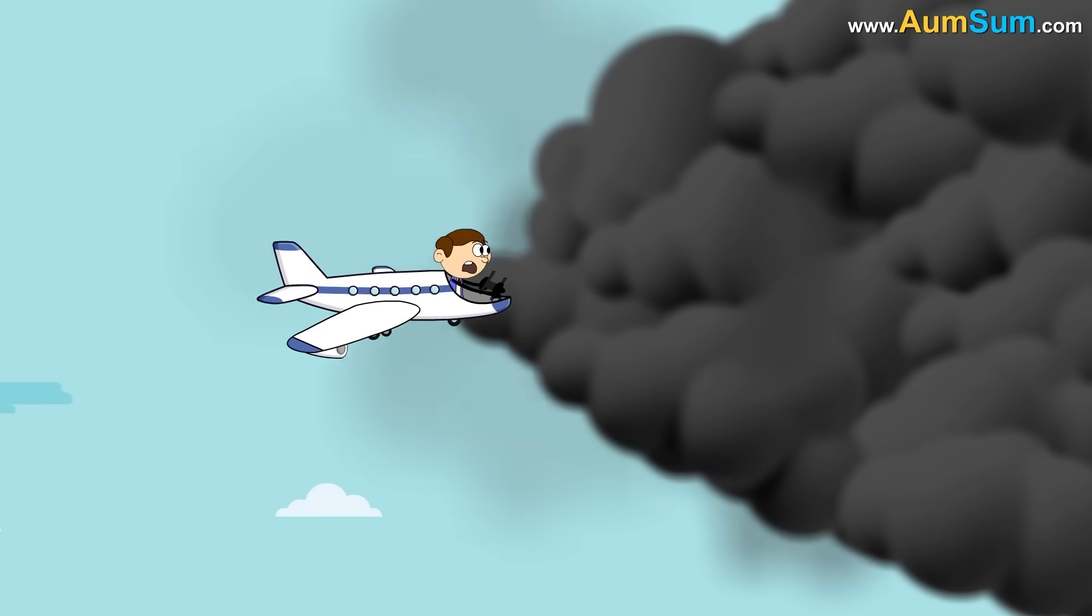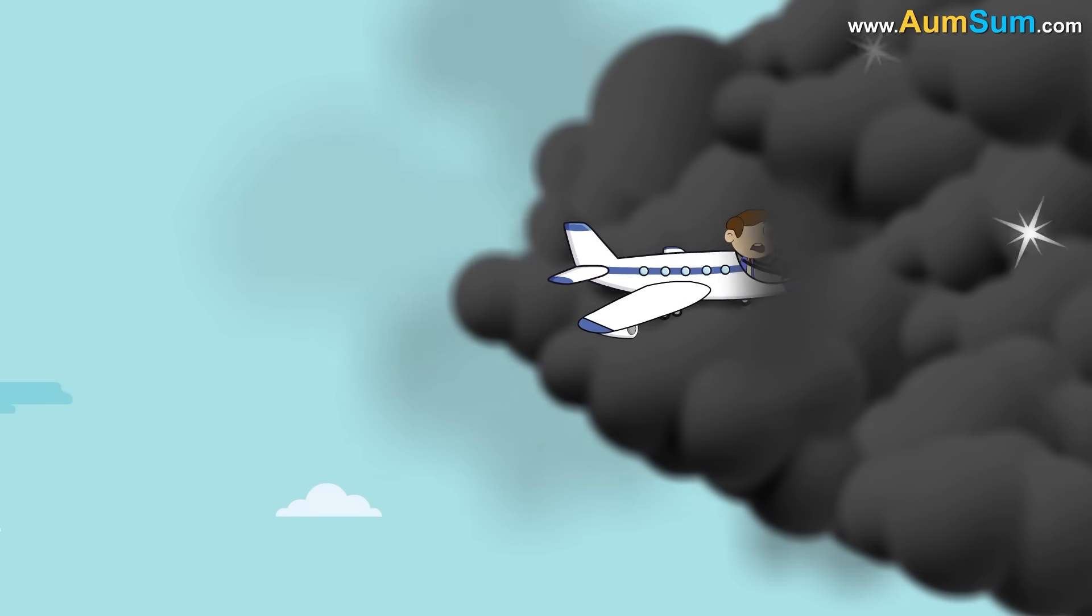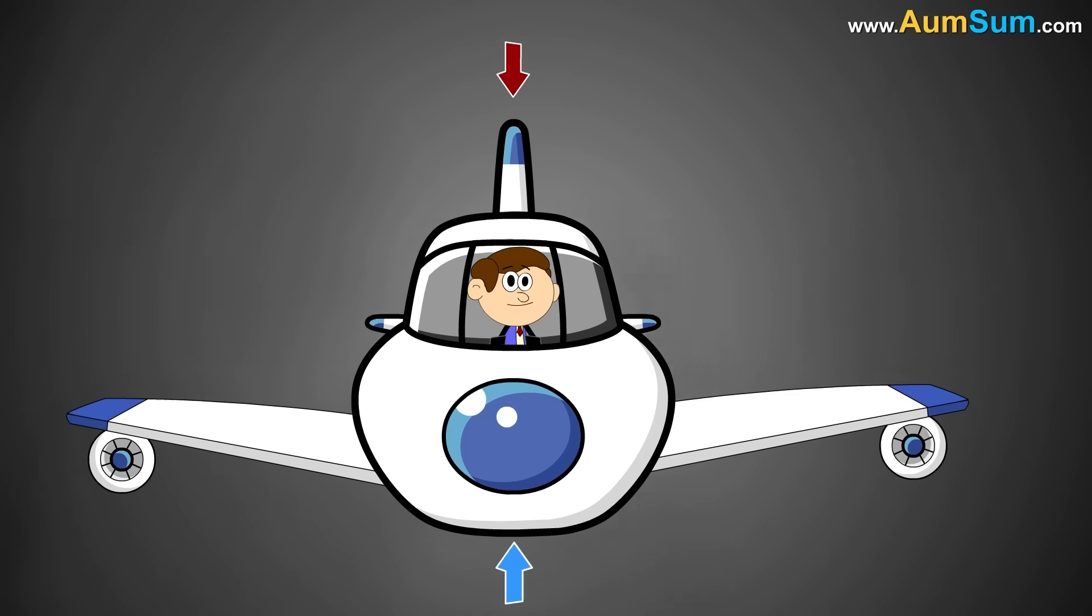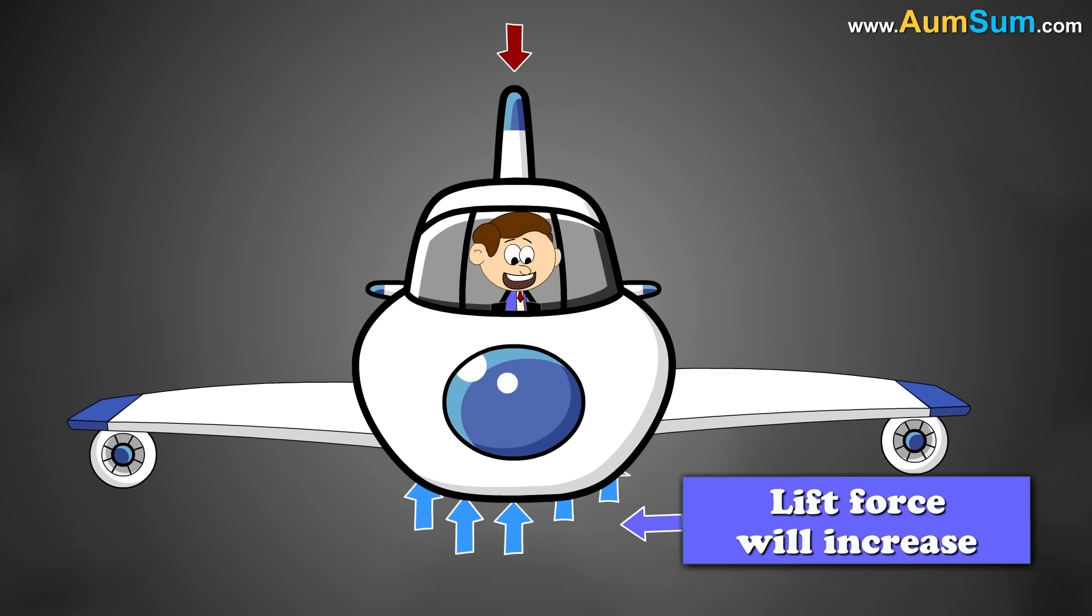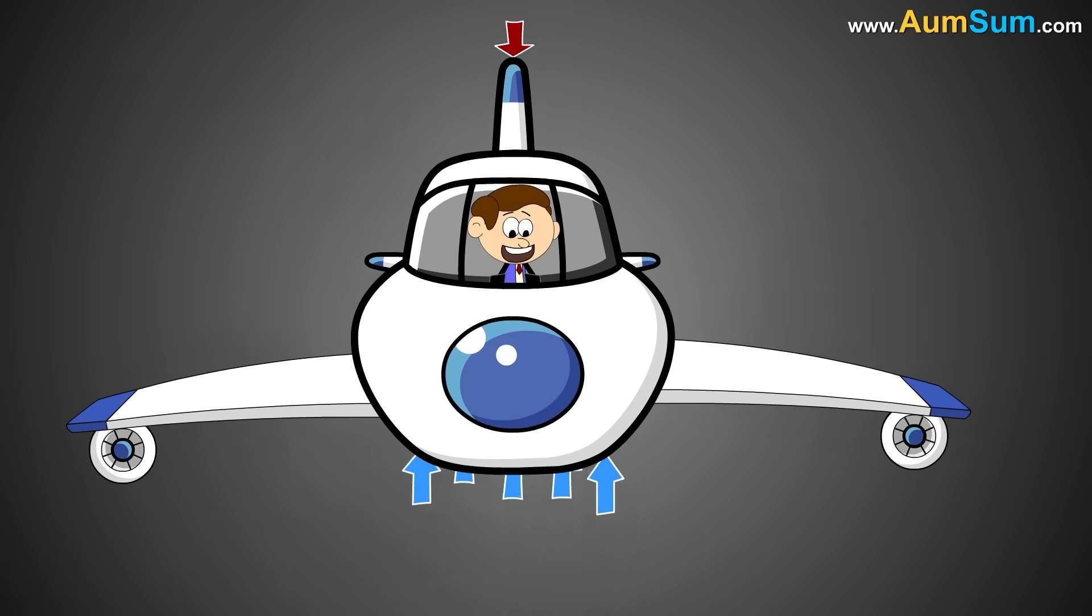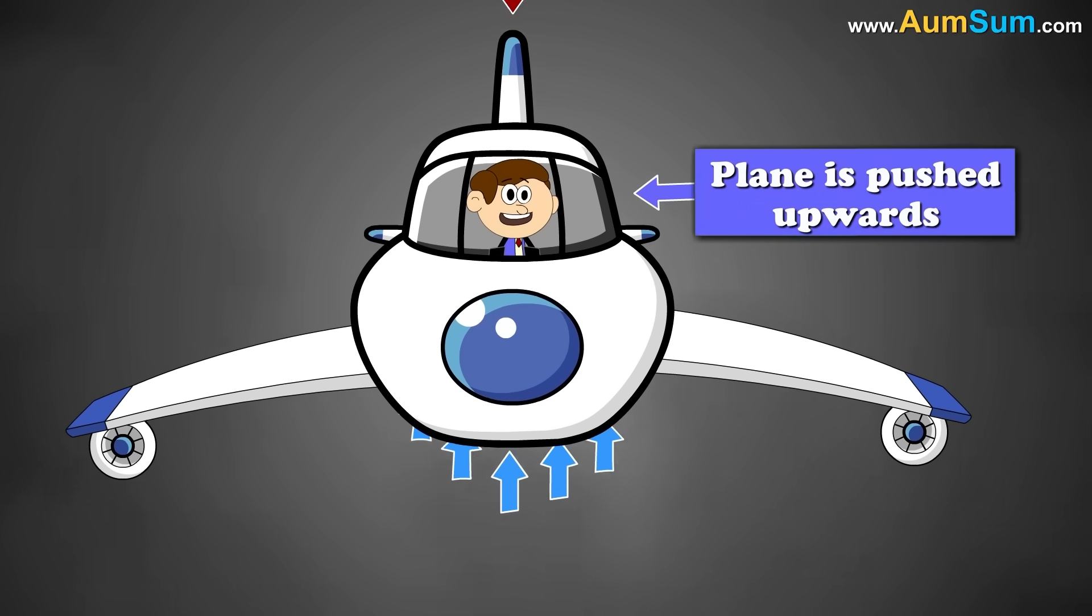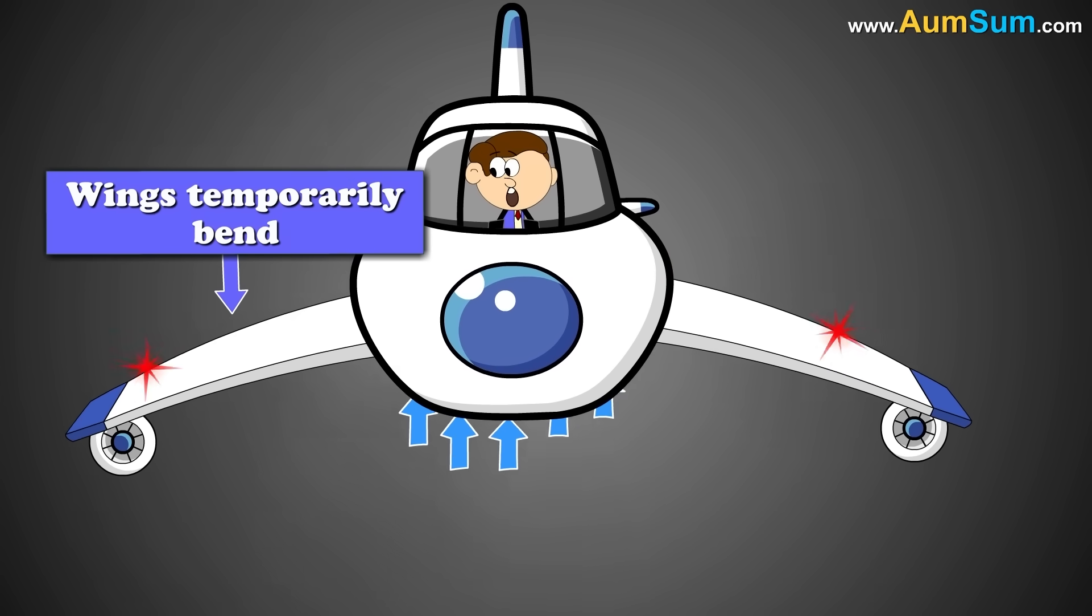Now if the plane enters an area of higher air density, say a large cloud, then this would lead to an increase in the force pushing it up. As in lift force will increase. As a result, the plane is pushed upwards and its wings temporarily bend up in the process.